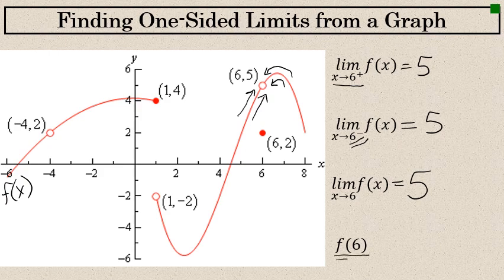The actual value of f of 6 may or may not be the same thing as the one-sided limits. In this case, the actual value of f of 6 — the point on this function where the x coordinate is 6 — is actually 6 comma 2. So f of 6 equals 2. That has nothing to do with the limit, because a limit is just concerned with where the graph is moving towards or appears to be approaching from the left and right. The fact that the actual point at x equals 6 is 6 comma 2 does not relate to the limit.